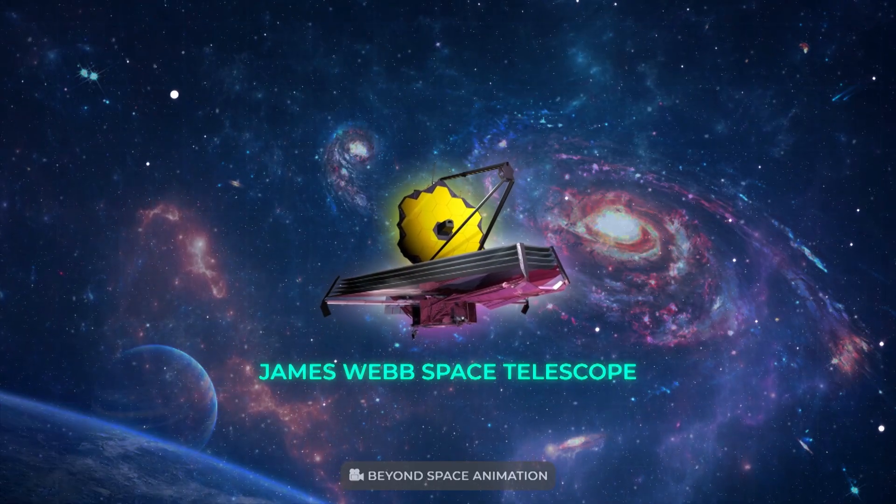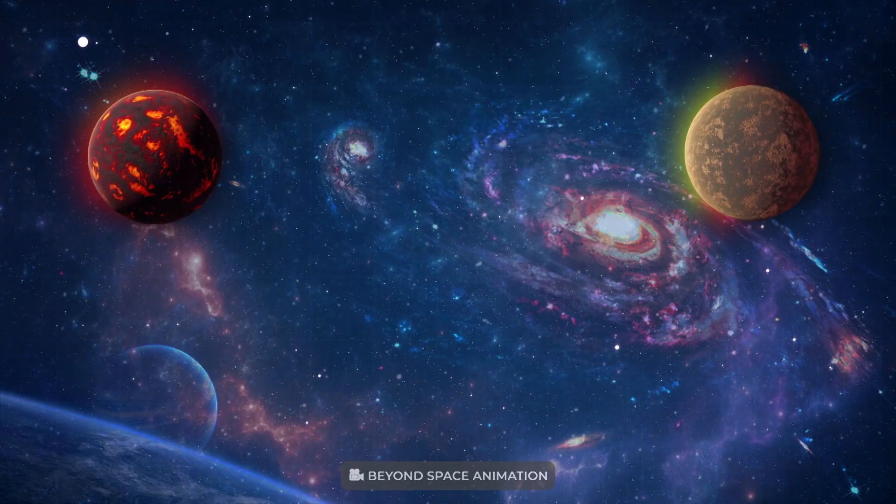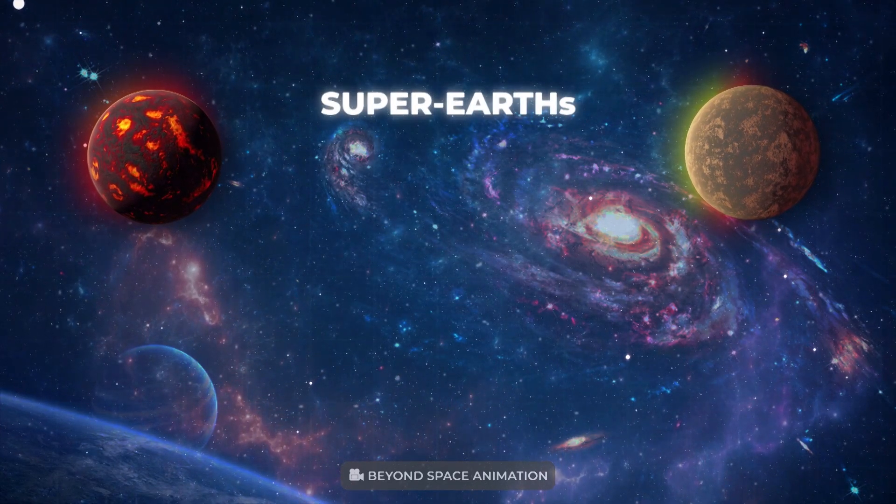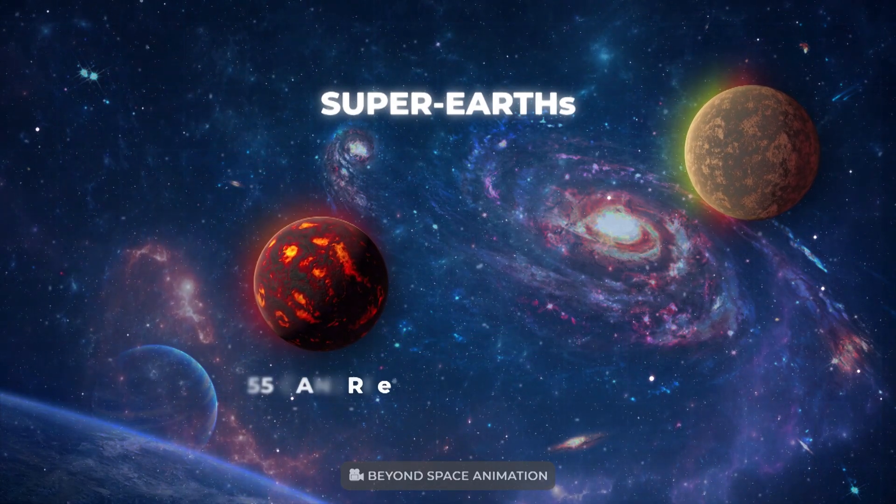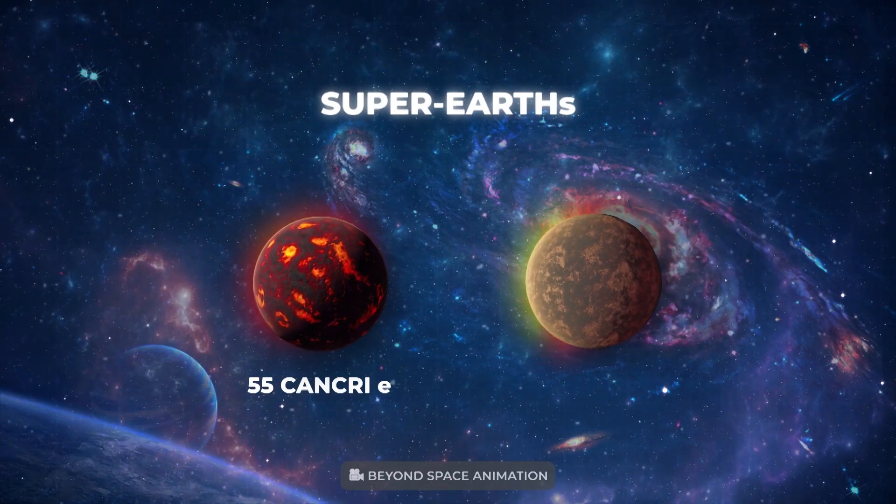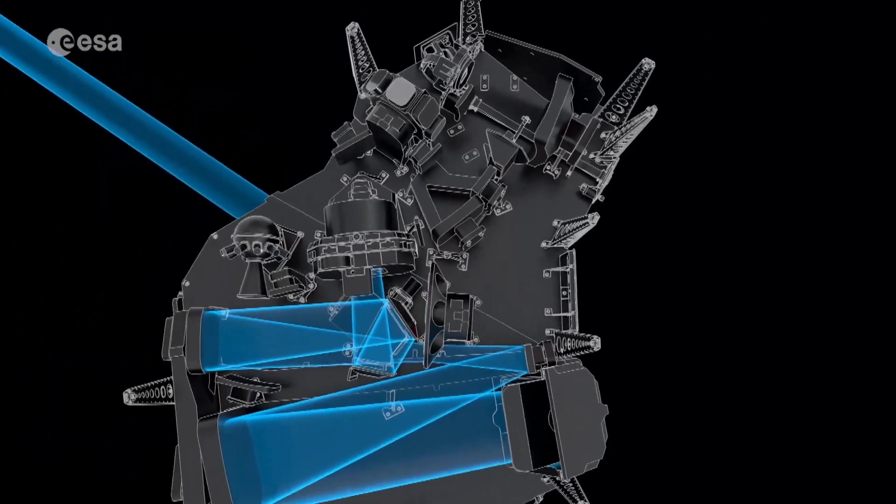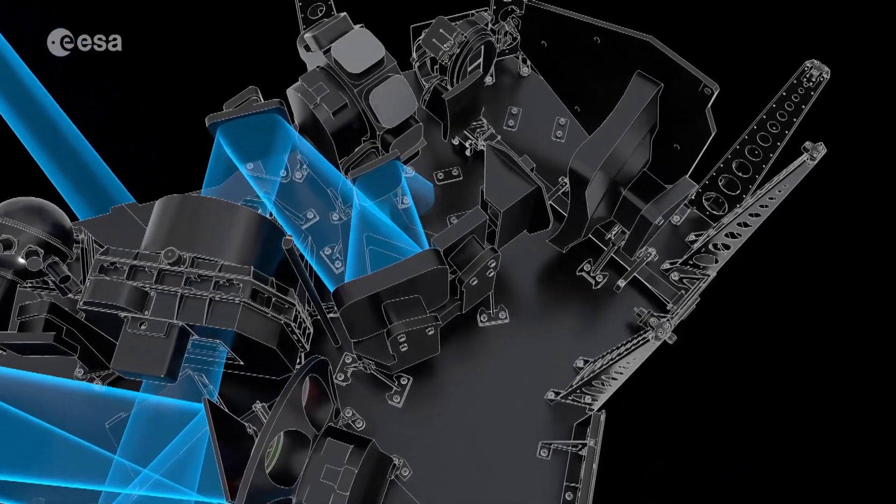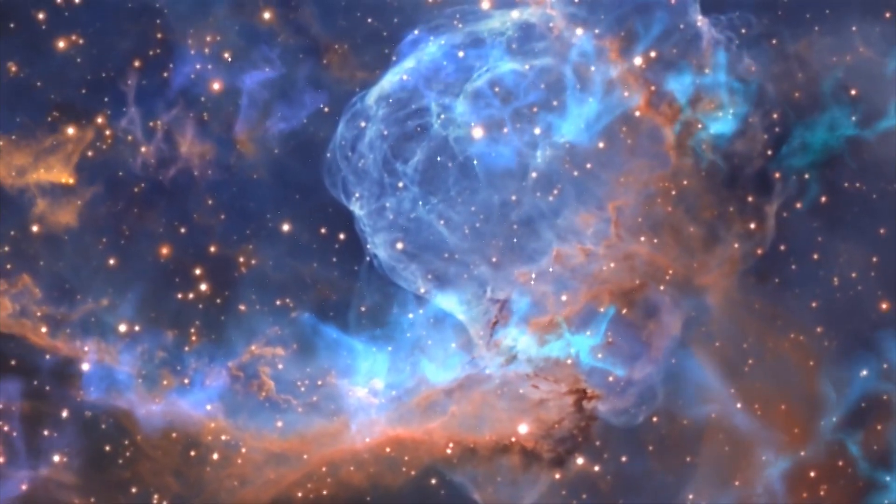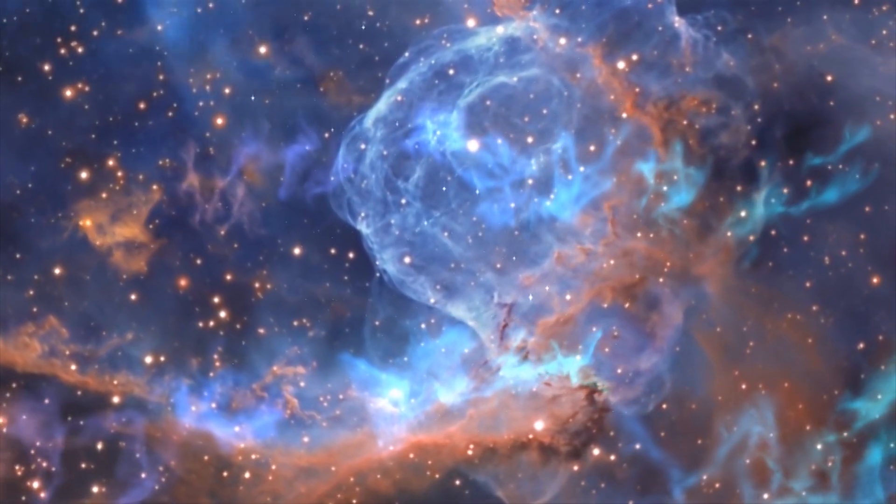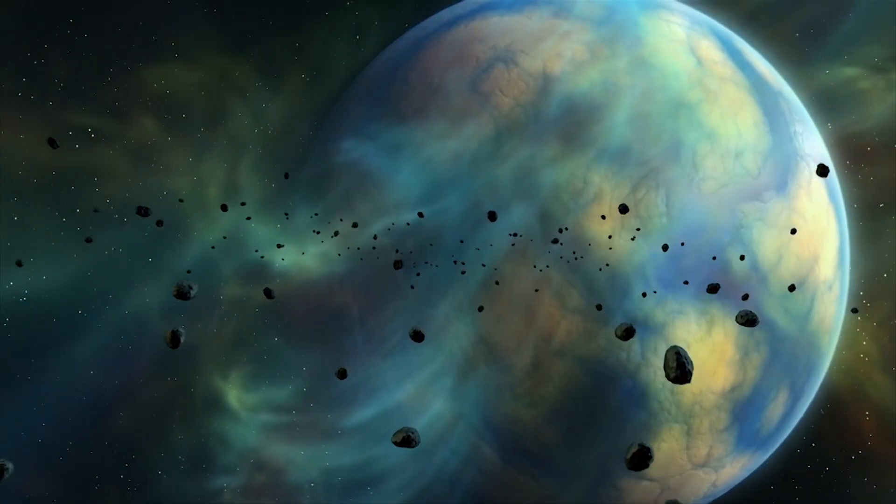Among the investigations planned for the first year are studies of two hot exoplanets, classified as super-Earths for their size and rocky composition: the lava-covered 55 Cancri e and the airless LHS 3844b. Researchers will train Webb's high-precision spectrographs on these planets with a view to understanding the geologic diversity of planets across the galaxy and the evolution of rocky planets like Earth.